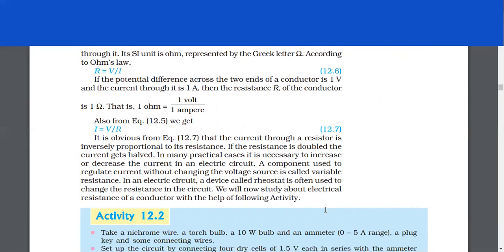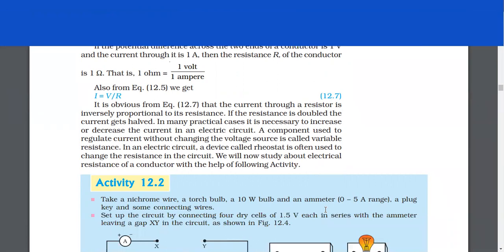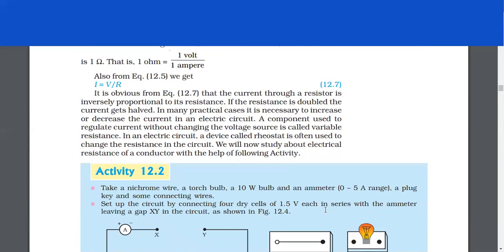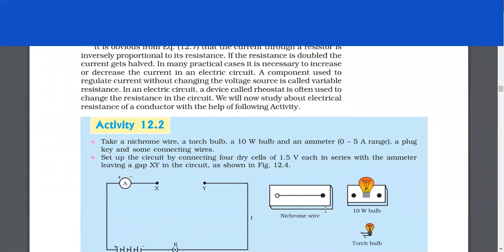From equation 12.5, we get I = V/R. The current through a resistor is inversely proportional to its resistance. If the resistance is doubled, the current gets halved. In many practical cases, it is necessary to increase or decrease the current in an electric circuit. A component used to regulate current without changing the voltage source is called the variable resistance. In an electric circuit, a device called rheostat is often used to change the resistance in the circuit.